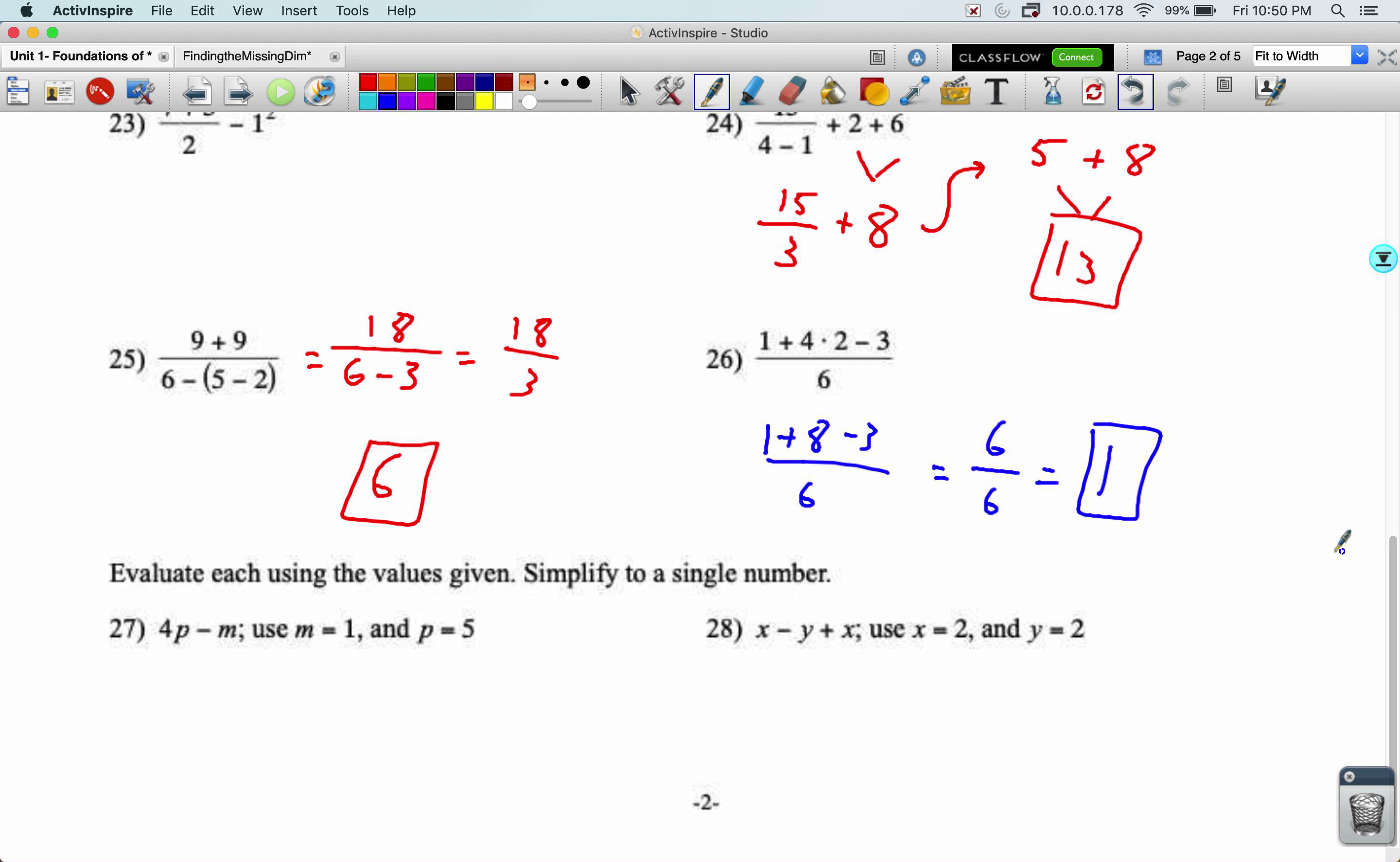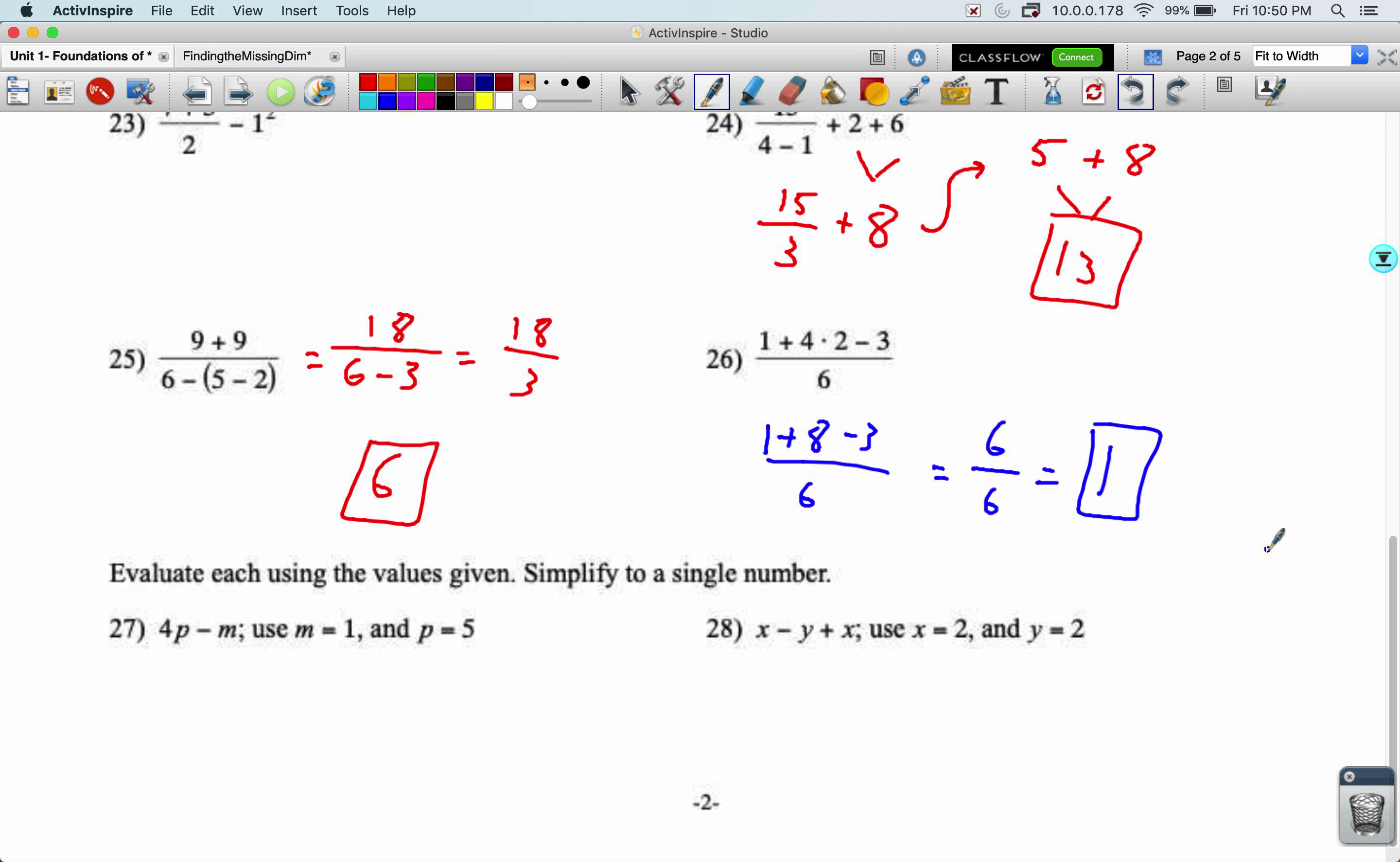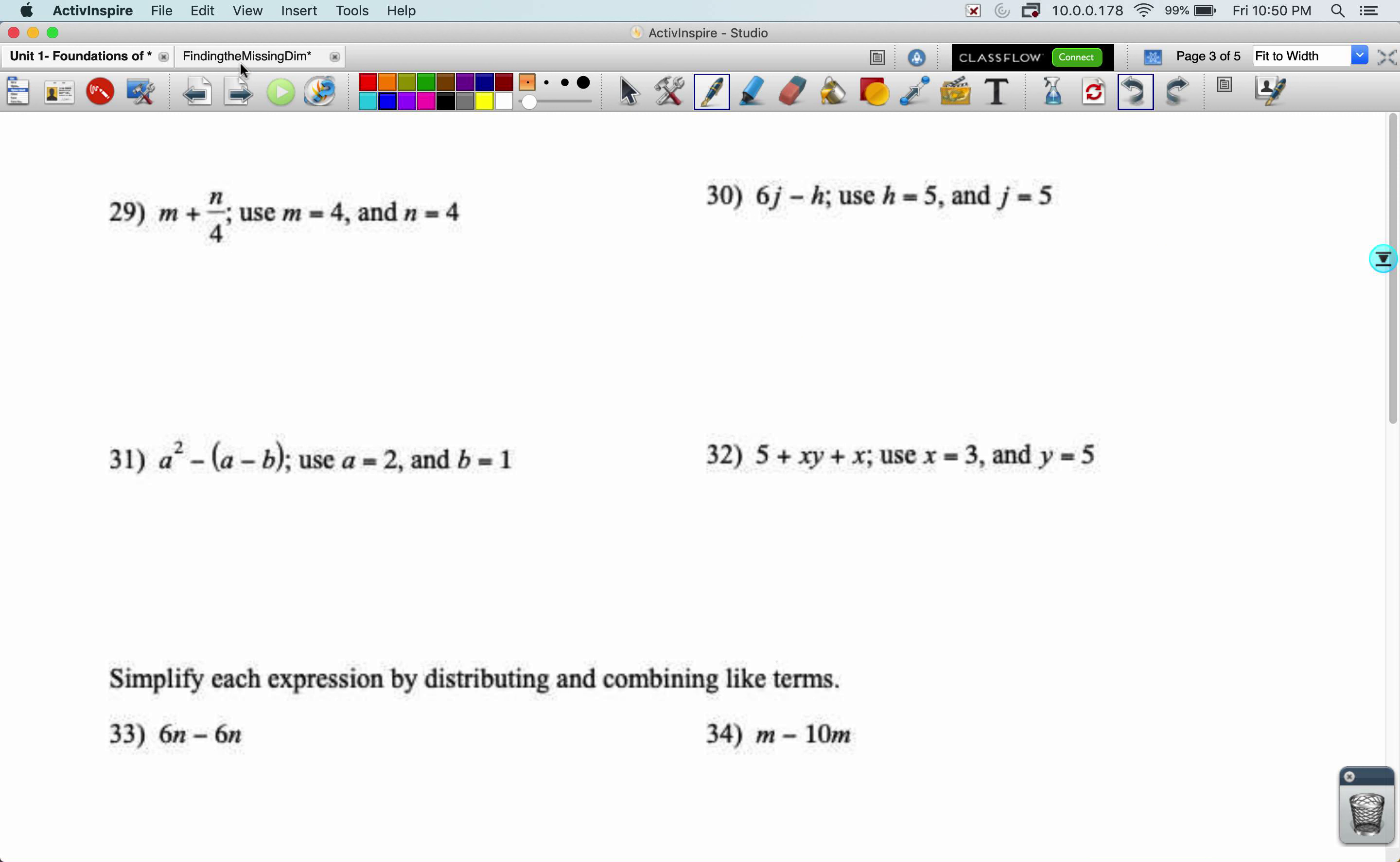Evaluating using the values given. This is also called substituting. So I'm going to plug in these numbers. So here's my expression for P minus M, but I'm going to replace the M with a one. I'm going to replace the P with a five. So this is now going to become four times five minus one. Four times five is a 20 minus one. That's going to become a 19.